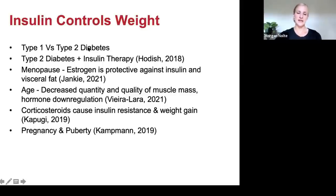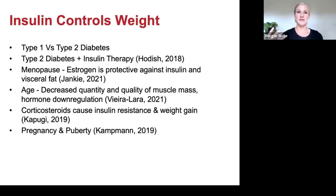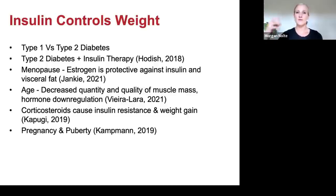Here are excellent examples of why insulin controls weight. Look at type 1 versus type 2 diabetics. Type 1 diabetics don't make insulin, so they can't move the GLUT4 transporter to the cell membrane — the only way they can get glucose into cells is through exercise. Their cells are starving for energy, so they have very high blood sugar, high thirst, constant hunger, but they cannot gain weight. No insulin — cannot gain weight. That's a very important link.